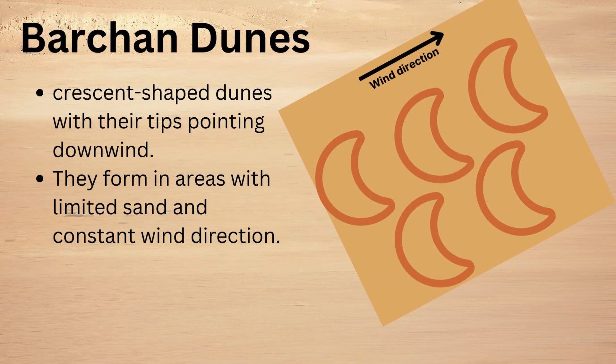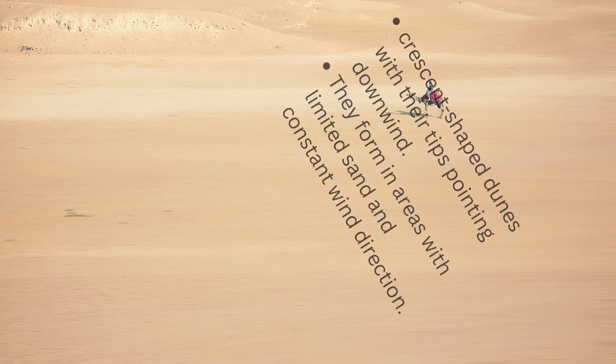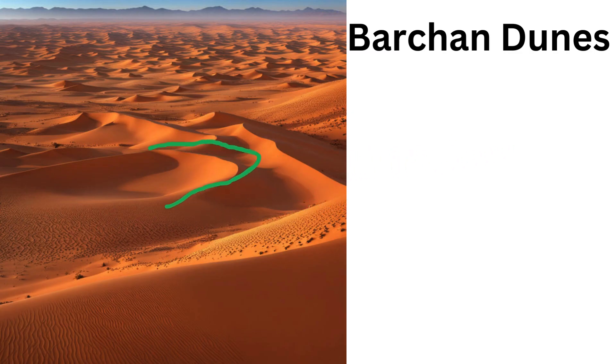First one: barchan dunes. These are crescent-shaped dunes with their tips pointing downwind. Here in this image, you can see the wind direction and the tips are pointing in the opposite direction. They form in areas with limited sand and constant wind direction. This type of barchan dunes are common in the Sahara desert.